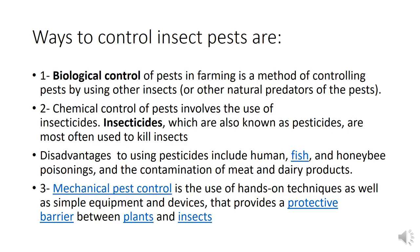The ways to control insects include biological control, mechanical control, and chemical control. Biological control of pests in farming is a method of controlling pests by using other insects, natural predators, or other animals.